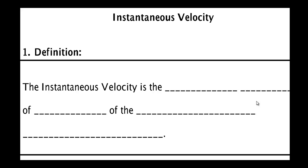Because instantaneous velocity is what we really want most of the time, physicists being a little lazy generally leave out the word 'instantaneous.' So when people say 'what is the velocity of the car,' they mean the instantaneous velocity. If they want the average velocity, they will specifically say 'what is the car's average velocity.'